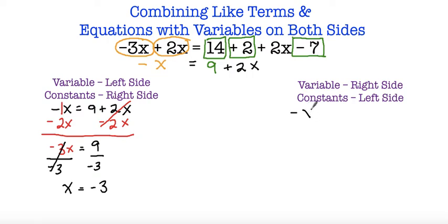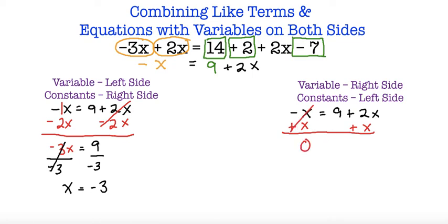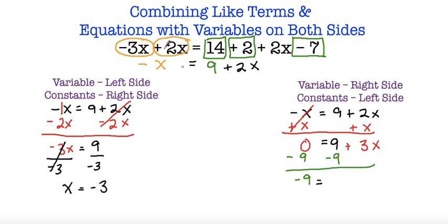Now we're going to do the same thing: negative x is equal to 9 plus 2x. If I want to move variables to the right side I'm going to add x on both sides. So I have 0 is equal to 9, and then 2x plus x, which is 3x. Now I'm going to subtract both sides by 9 to get my constants on the left side. I end up with negative 9 is equal to 3x — these cancel out because they're opposites. To get x by itself I divide both sides by 3: negative 9 divided by 3 is negative 3, equal to x. So x is equal to negative 3 using whichever method.